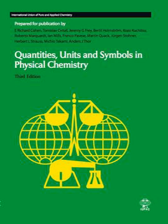Quantities, Units and Symbols in Physical Chemistry, also known as the Green Book, is a compilation of terms and symbols widely used in the field of physical chemistry. It also includes a table of physical constants, tables listing the properties of elementary particles, chemical elements, and nuclides, and information about conversion factors that are commonly used in physical chemistry. The Green Book is published by the International Union of Pure and Applied Chemistry and is based on published, citable sources.